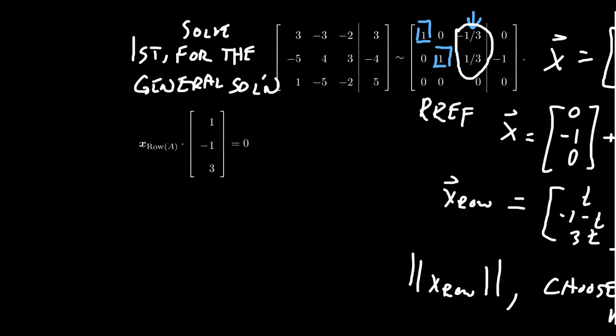And the idea is going to be the following right here. Remember that the row space is the orthogonal complement to the null space. And since we now have a basis to the null space, which is the general solution to the homogeneous system of equations, we can take our vector X-row and we take the dot product with each and every basis vector for the null space.